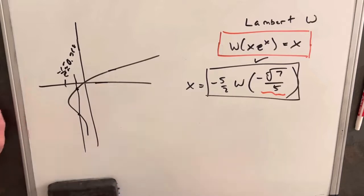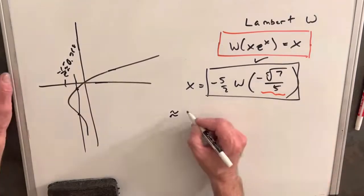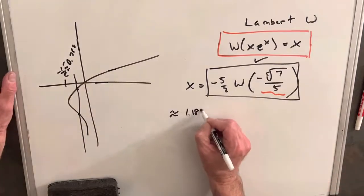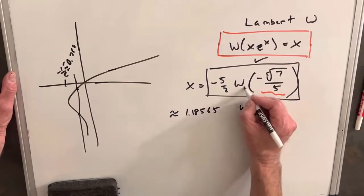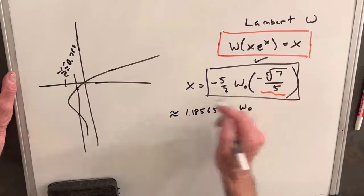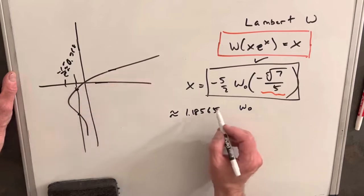So what I did is I just plugged that into Wolfram Alpha. So one value I found by plugging this in was 1.18565. And this is from, if we did the principal branch, that's going to be from this value. It will give us this value.